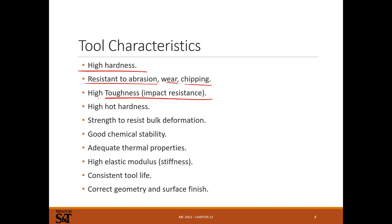We want tough materials, and toughness and strength are different things. Strength is related to hardness — the harder something is, usually the stronger it is, meaning the yield strength is higher. But as you harden steel, the hardness goes up, the strength goes up, but the toughness — the resistance to impact — goes down. The harder something gets, the more brittle it gets, the lower the toughness, and the more susceptible it is to breaking under impact or fatigue failure.